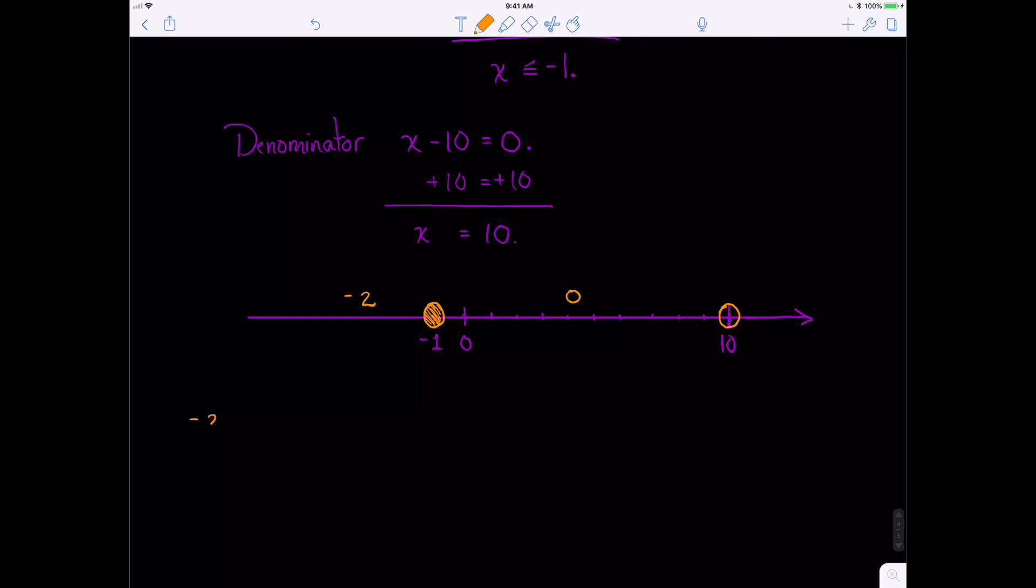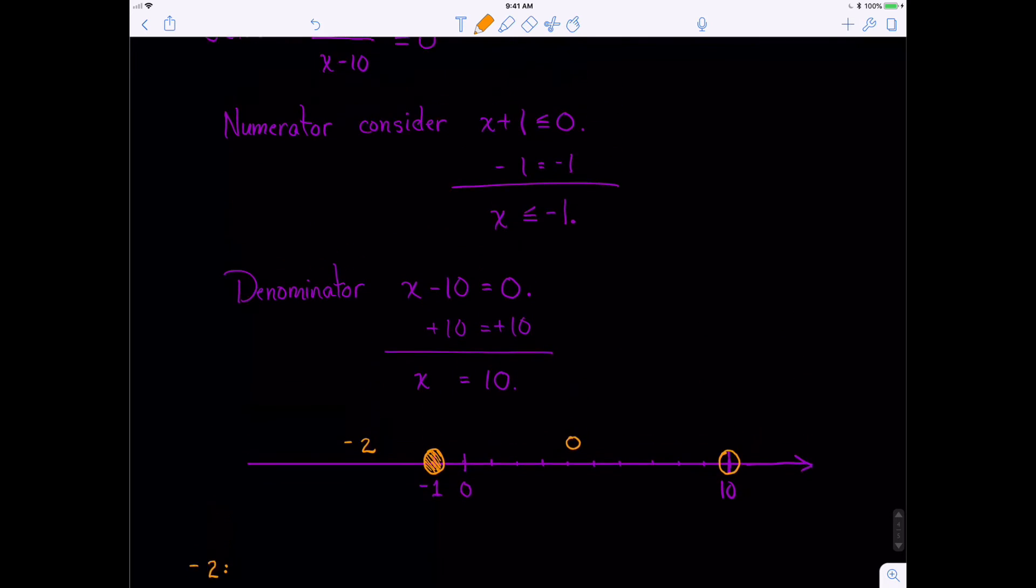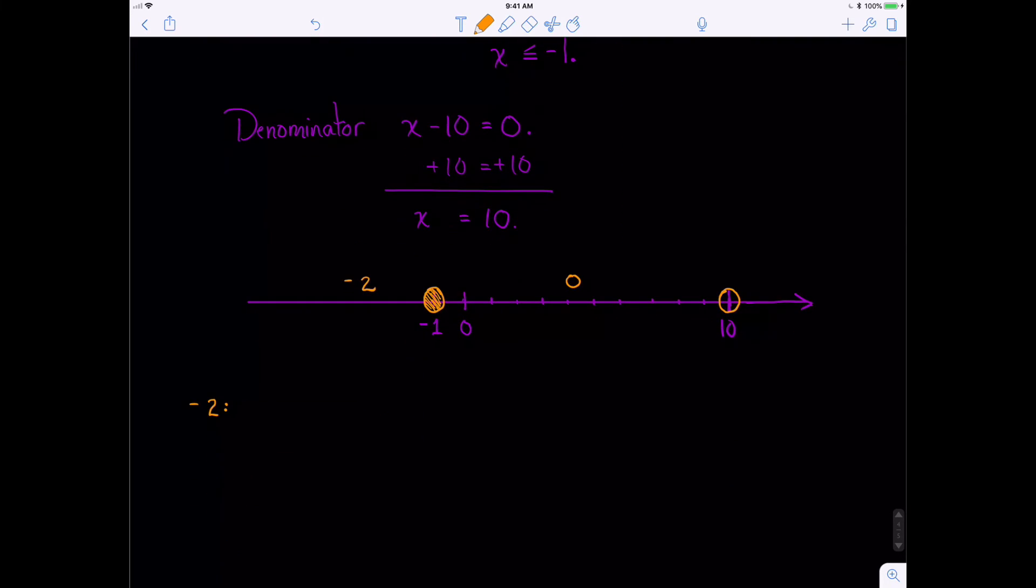All right, let's try our value. So let's see what happens when we're in the negative 2 range. Well, then we go back to our beginning equation. Let's see. x plus 1 over x minus 10. So then we go minus 2 plus 1 over negative 2 minus 10. Well, let's see. That's going to give me a negative 1 over a negative 12, which is really a positive 1/12. And is that less than or equal to 0? No. So this is false. So we do not shade in that region.